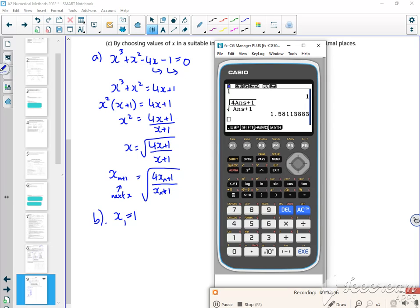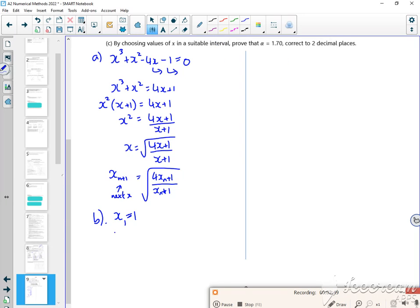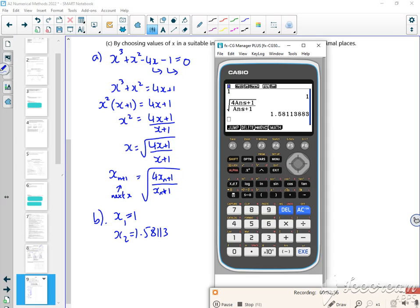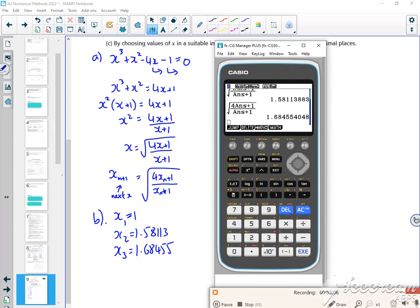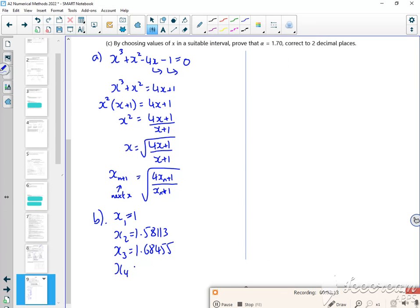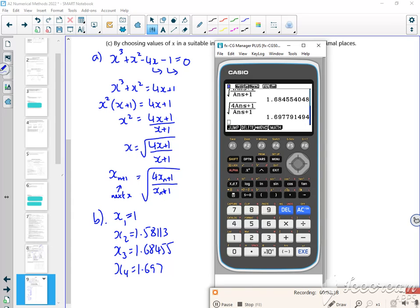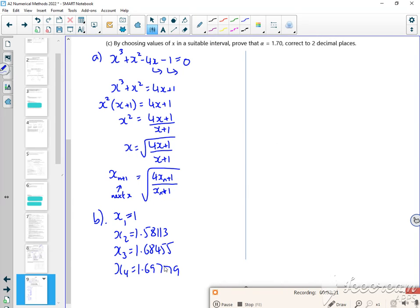1.58113, so I'm just going to write that down. All right, and then I'm just going to press equals again, 1.68455. Then I'm going to press it again, 1.6978.